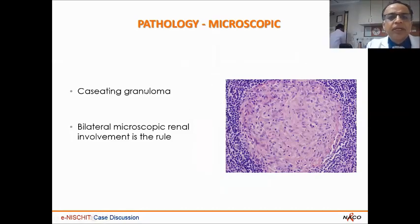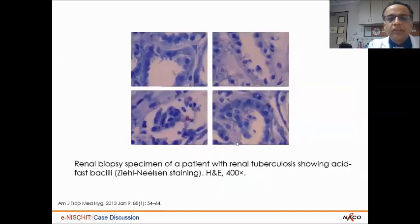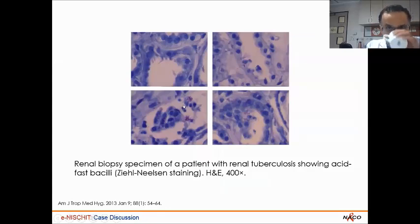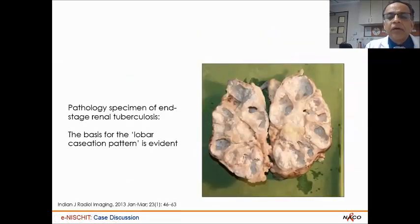If you do a kidney biopsy, you see a caseating granuloma. Bilateral microscopic renal involvement is the rule in most patients. This is the renal biopsy specimen showing acid-fast bacilli. One of our patients following transplant had tuberculosis pyelonephritis. This is a pathology specimen of end-stage renal tuberculosis showing lobar caseation — the white lobar kidney.